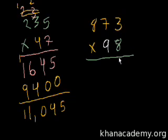Now we multiply by 9, which represents 90, so we put down a 0. 8 multiplied by 3 is 24. 8 multiplied by 7 is 56. 8 multiplied by 8 is 64. Then we continue multiplying by 9 across.